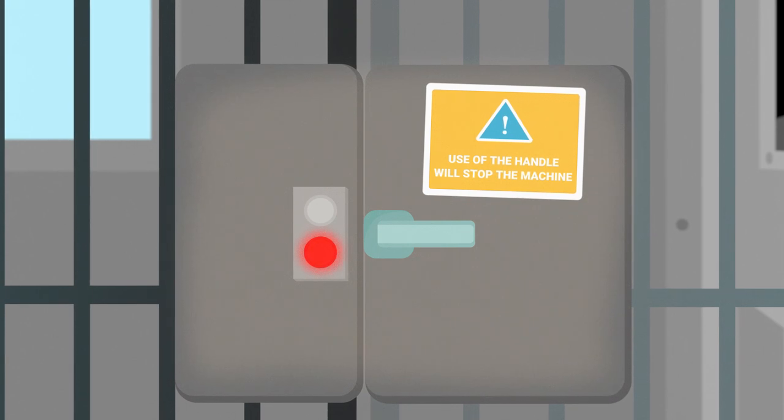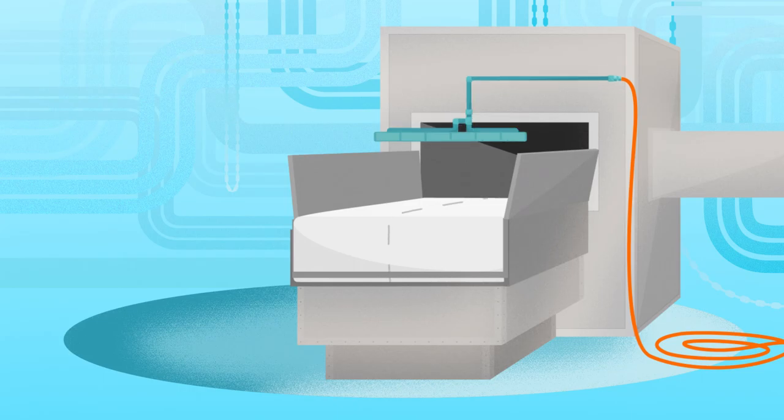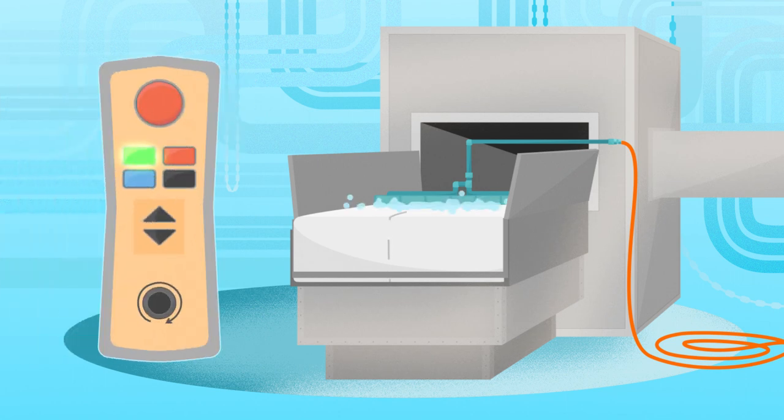People must be prevented from reaching into the moving parts of machinery. Dangerous work processes should be automated in order to avoid work in the machinery's hazard zone.